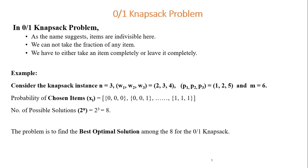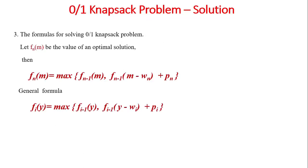Among the 2ⁿ combinations, some are feasible and some are not. Among the feasible solutions, the one giving maximum profit is the optimal solution. We define a function f(n, m) as the value of the optimal solution, where m is the current capacity of the bag. f(n, m) equals the maximum of f(n-1, m) — rejecting the nth item — or f(n-1, m-wn) + pn — accepting the nth item.